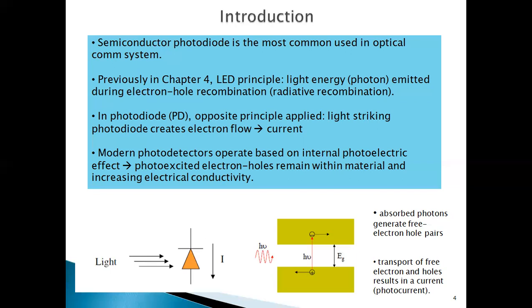For the case of the photodiode, the principle is the opposite. The photodiode is struck by light, and this light striking the photodiode creates an electron flow — a current — which is produced by the movement of carriers, both electrons and holes, in the PN junction. We're going to learn this in detail when covering the working procedures of the photodiode.